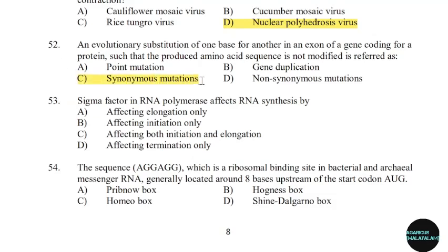53rd question: Sigma factor in RNA polymerase affects RNA synthesis by. Correct answer: Option B — Affecting initiation only.